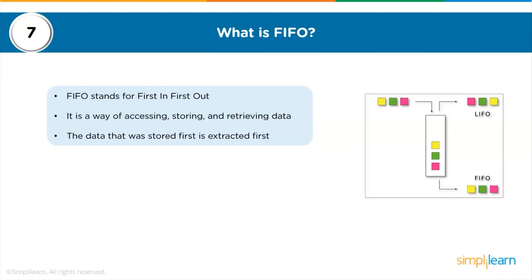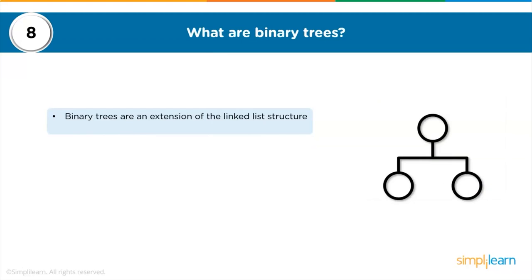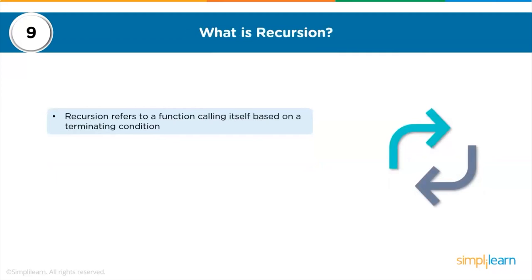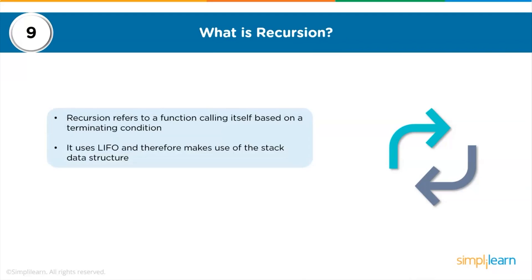What are binary trees? A binary tree is an extension of the linked list data structure where each node has two children. A binary tree has two nodes at all times — a left node and a right node — which are known as children of the top node. What is recursion? Recursion refers to a function calling itself based on a terminating condition. It uses last-in first-out functionality and therefore makes use of the stack data structure.